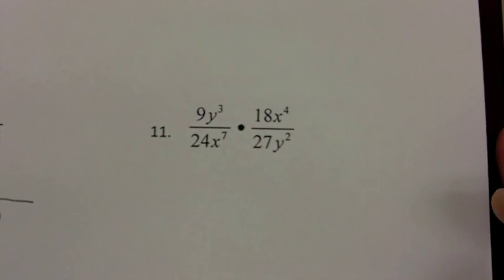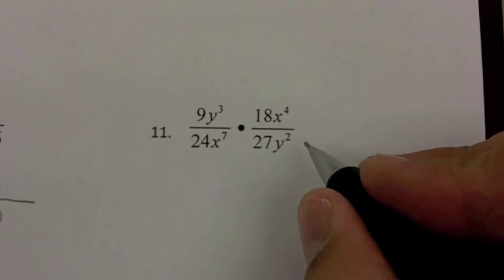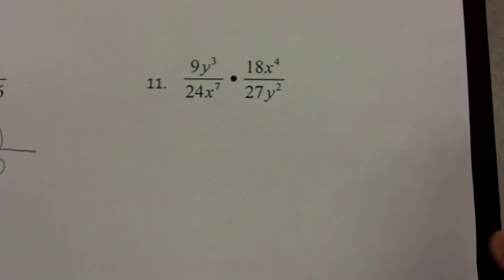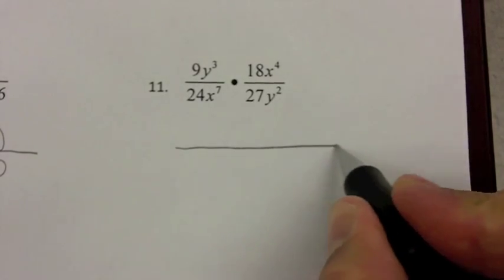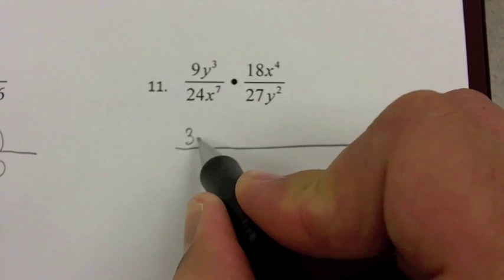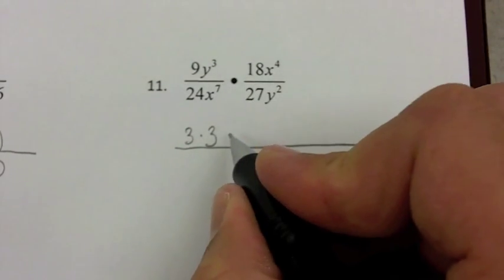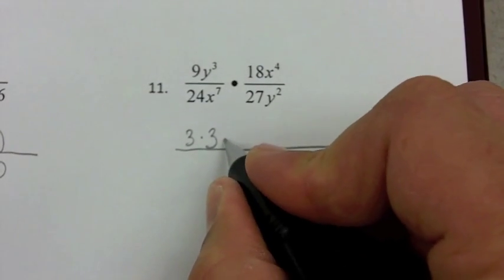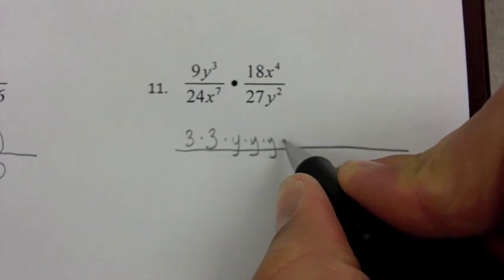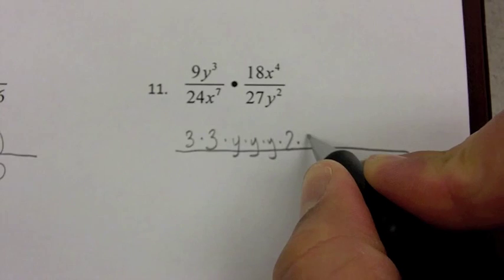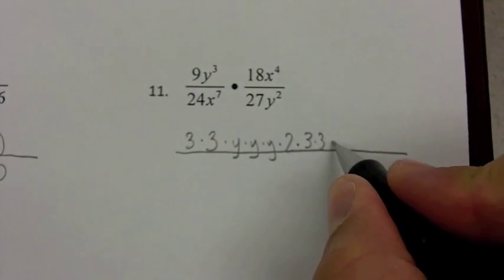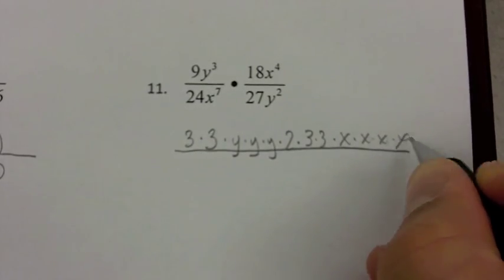Let's take a look at question 11. I'm asked to multiply these, but the easier way is to factor everything out. I'll draw a big fraction bar and start factoring. 9 is 3 times 3, and there are 3 y's. 18 is 2 times 9, and 9 is 3 times 3, with 4 x's. For the denominator, 24 is 4 times 6, and there are 7 x's.